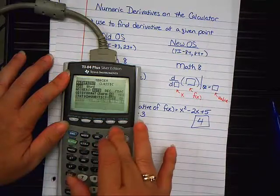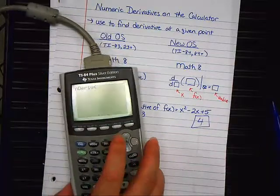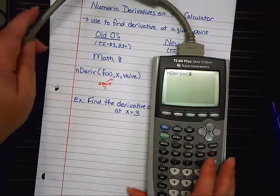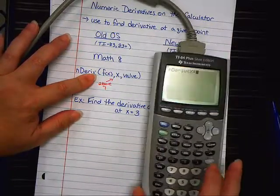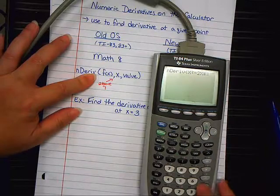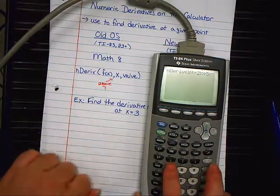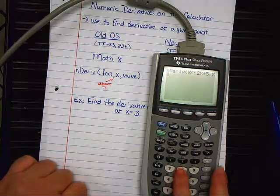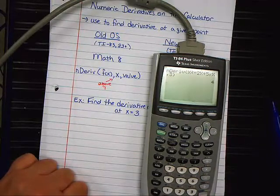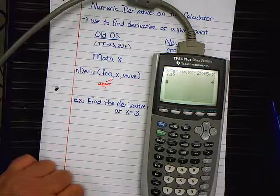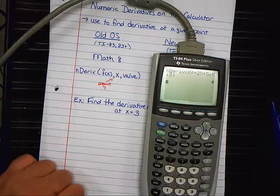The 83 method. So, you push math 8. This is what you see. For those of you with an 83, you're going to type the function in which is X squared. Make sure I type it right. Minus 2X plus 5. Then the comma, which is above the 7. Comma. Then an X again. And then another comma and the 3. Push enter. And there's your 4. Any questions? Are we good on that?